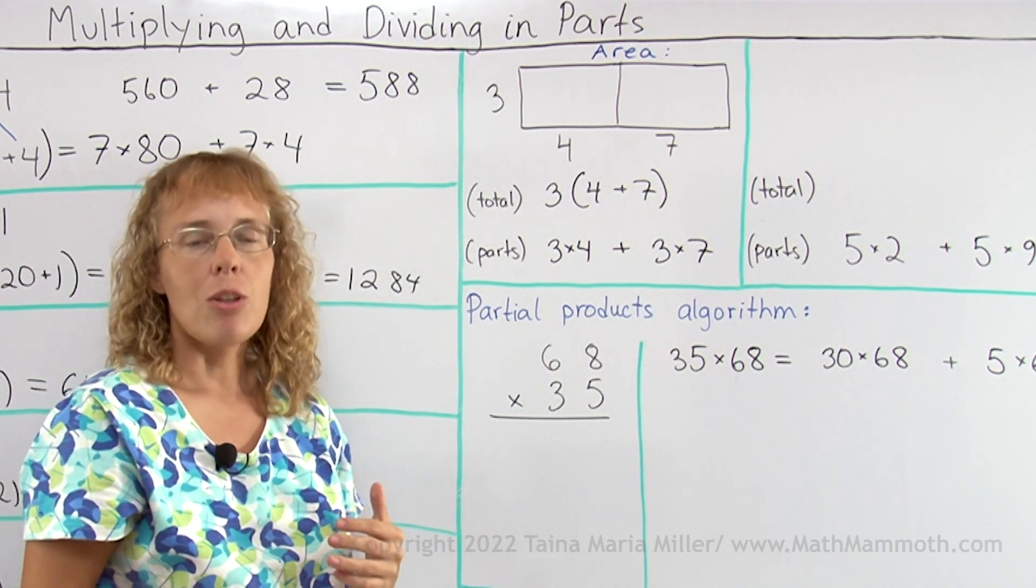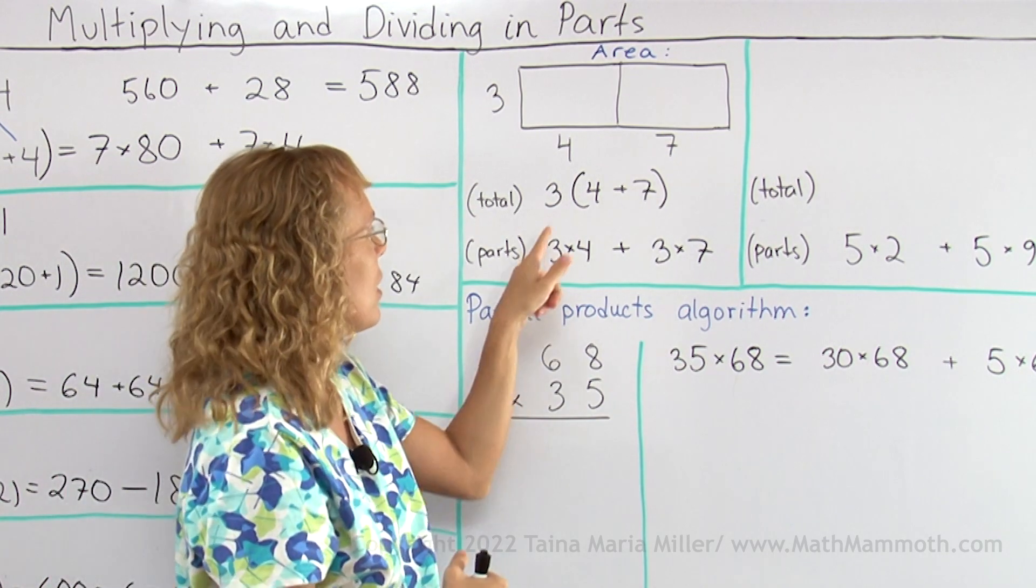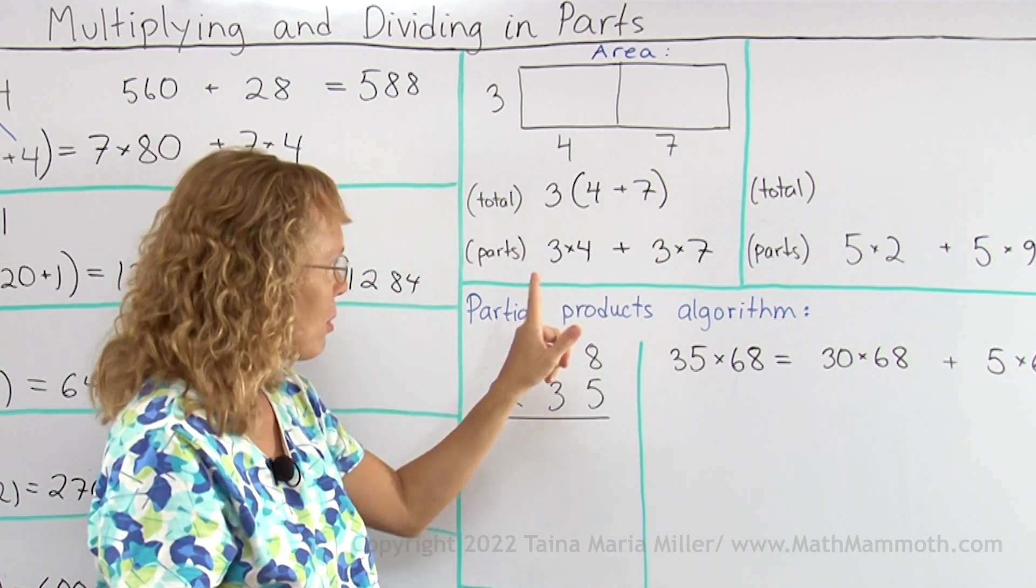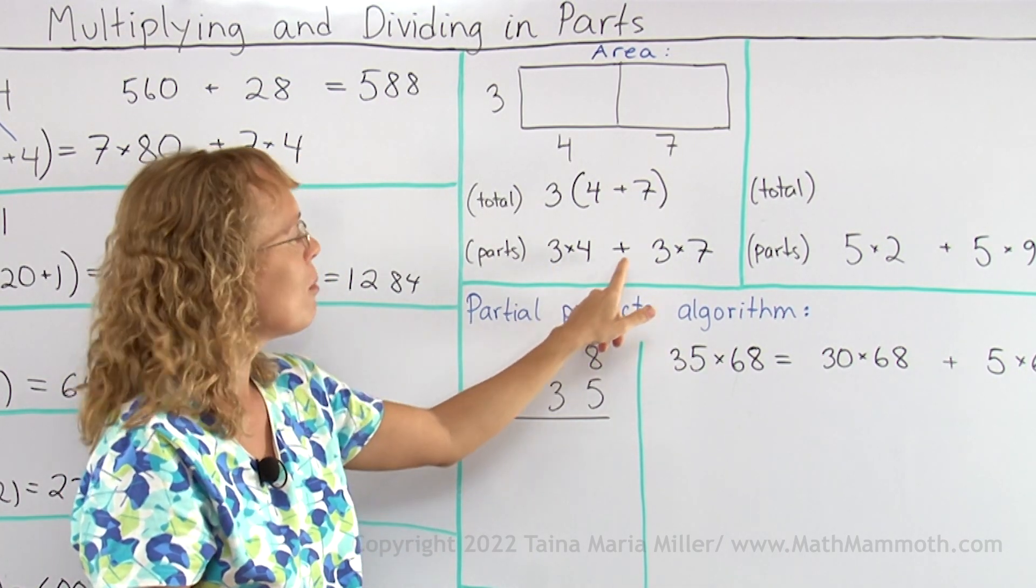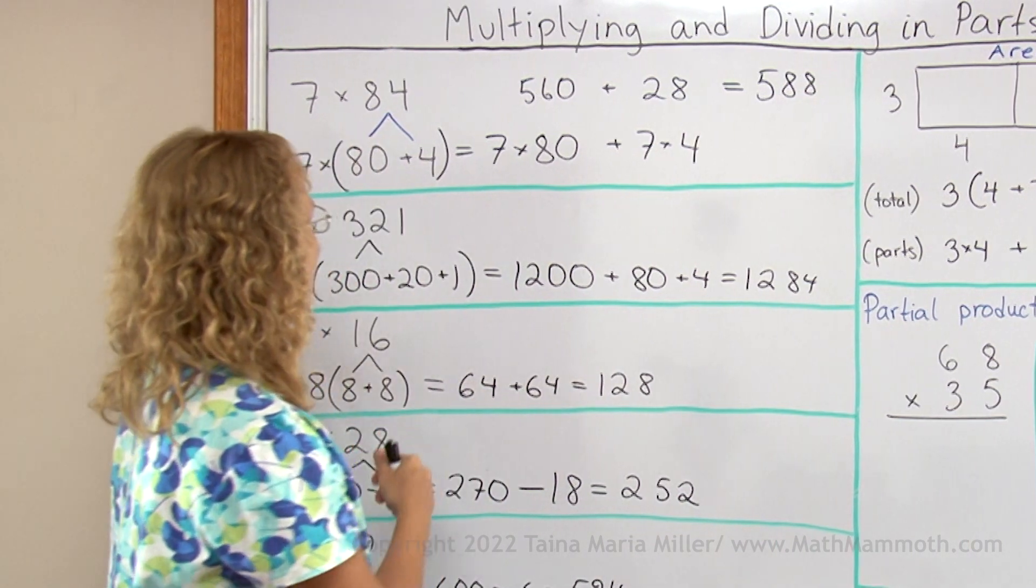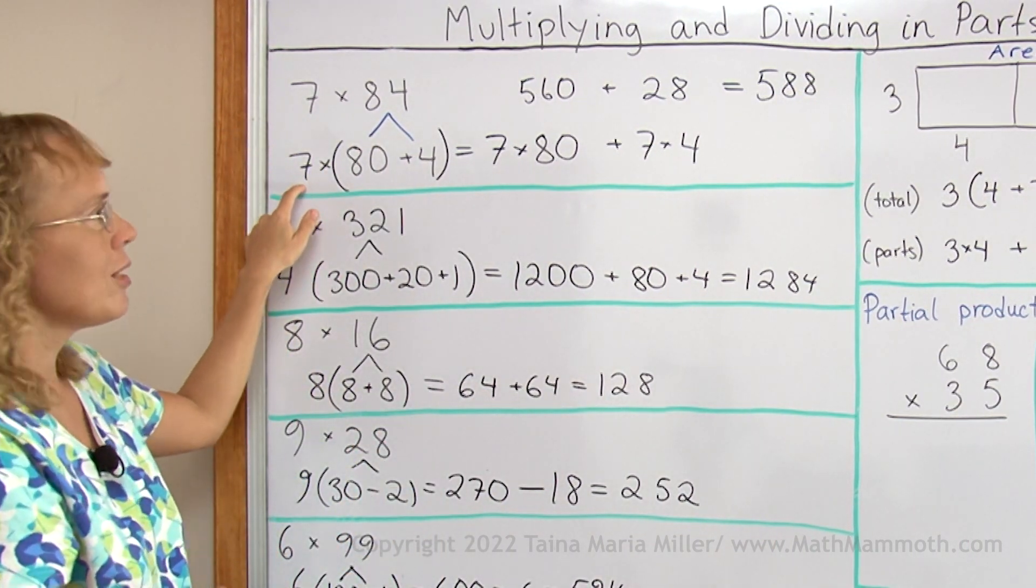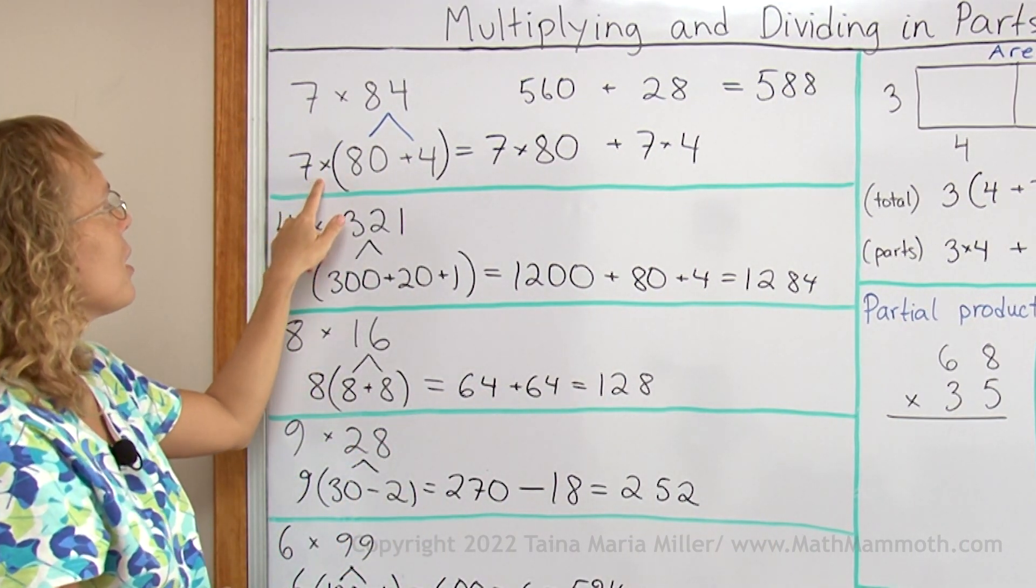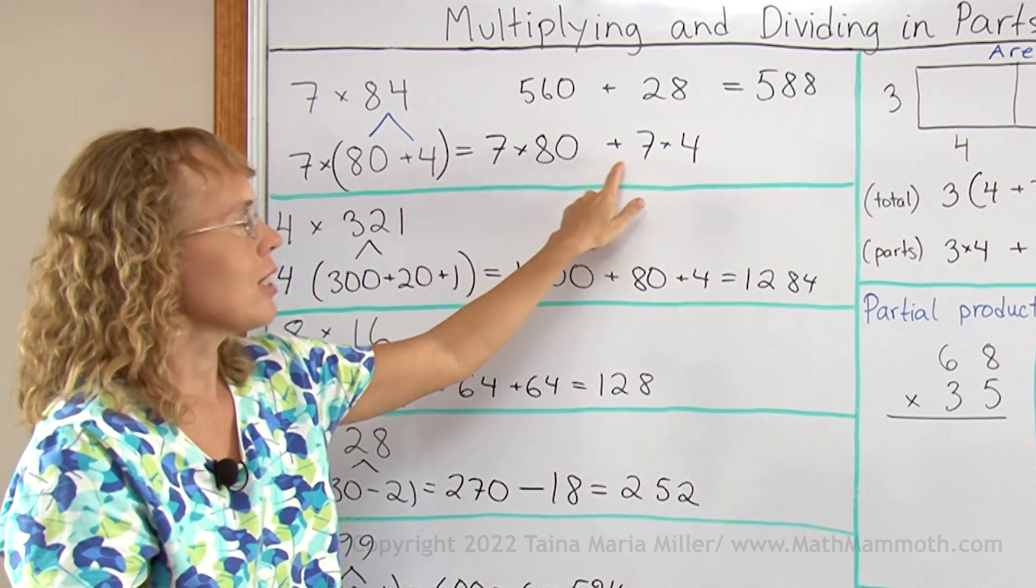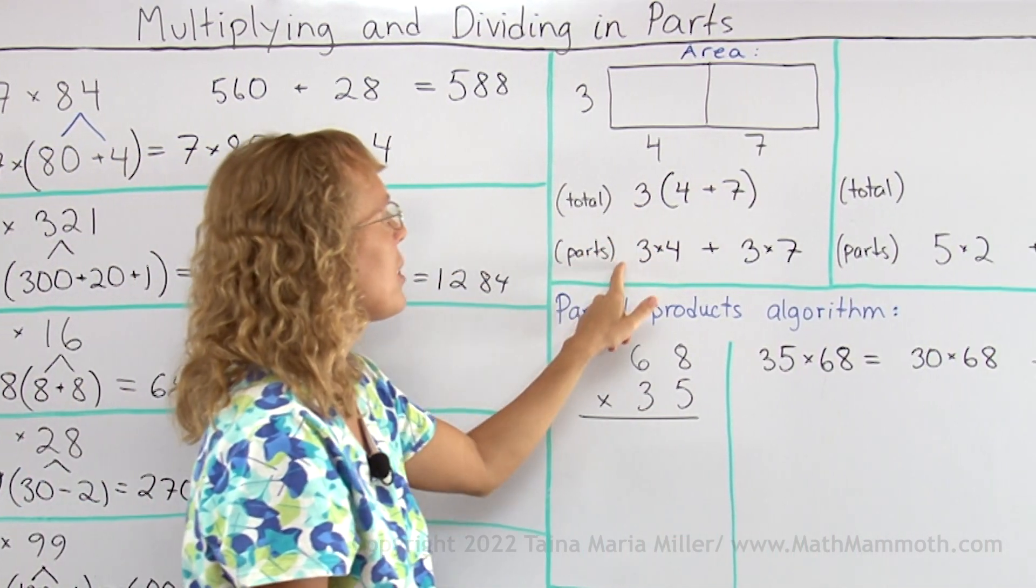These two expressions I wrote are equal. 3 times the quantity 4 plus 7 is equal to 3 times 4 plus 3 times 7. That's exactly what we did here, right? I had here 7 times a sum and then I had here the two multiplications and addition. Okay? This is the same exact thing.